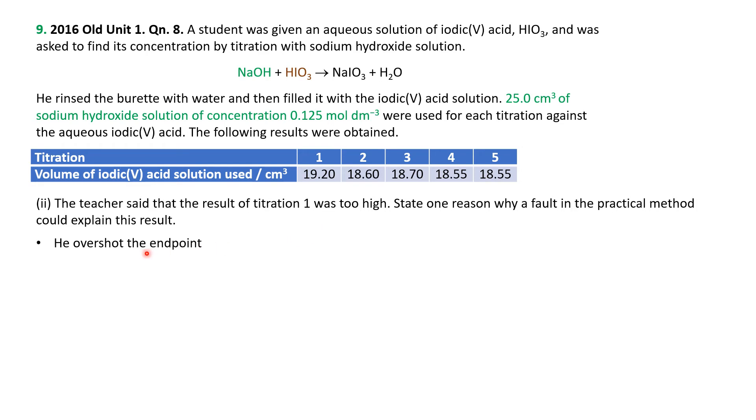Therefore, two ways that you could think of this. First of all, that the student overshot the endpoint, in other words, added more than he or she should have done. Or of course, the burette was not rinsed out with the acid solution properly, so you had some water remaining in the burette. That water would count for the volume, but it wouldn't count chemically to neutralize the HIO3.